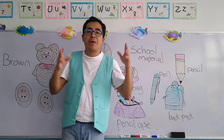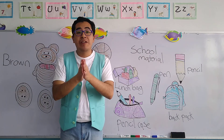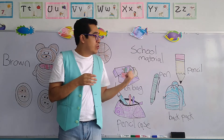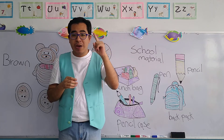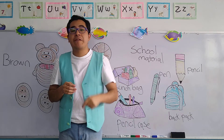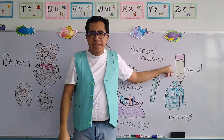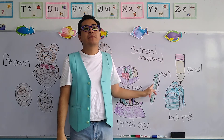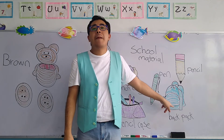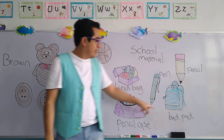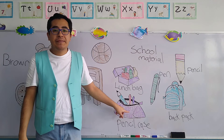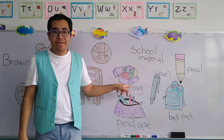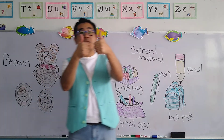These are some of the most common school materials that we find in a school. So I'm going to say them one more time — please, my children, repeat after me. Pencil. Pen. Backpack. Pencil case. Lunch bag. Very good. That's all the pronunciation. Thumbs up.